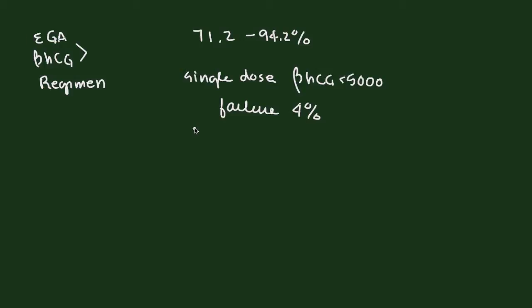If your beta HCGs are greater than 5,000, then certainly your success will go down significantly. The other question that I understand why patients ask is, if you operated on me, would I do better, or is it better to get the medical therapy?